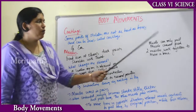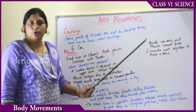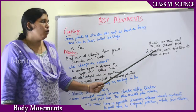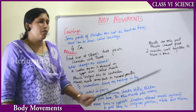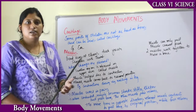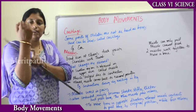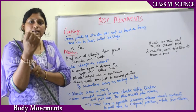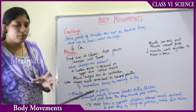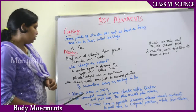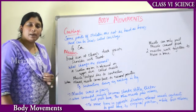Muscles can only pull — muscles cannot push. Two muscles work together to move a bone, not a single muscle. One muscle contracts and one muscle relaxes — that is how any movement happens. So muscles always work in pairs and together they work.